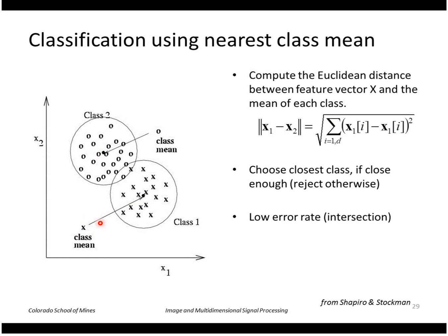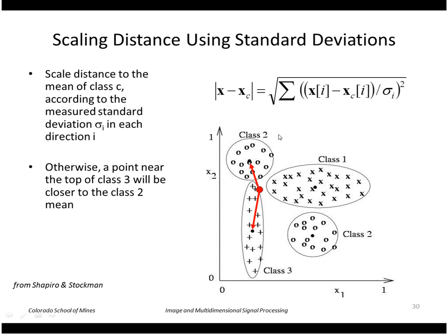We could use the Euclidean distance for that. A problem though is that if the classes are not uniformly distributed about the mean, for example here I have class 3 which is very elongated vertically.